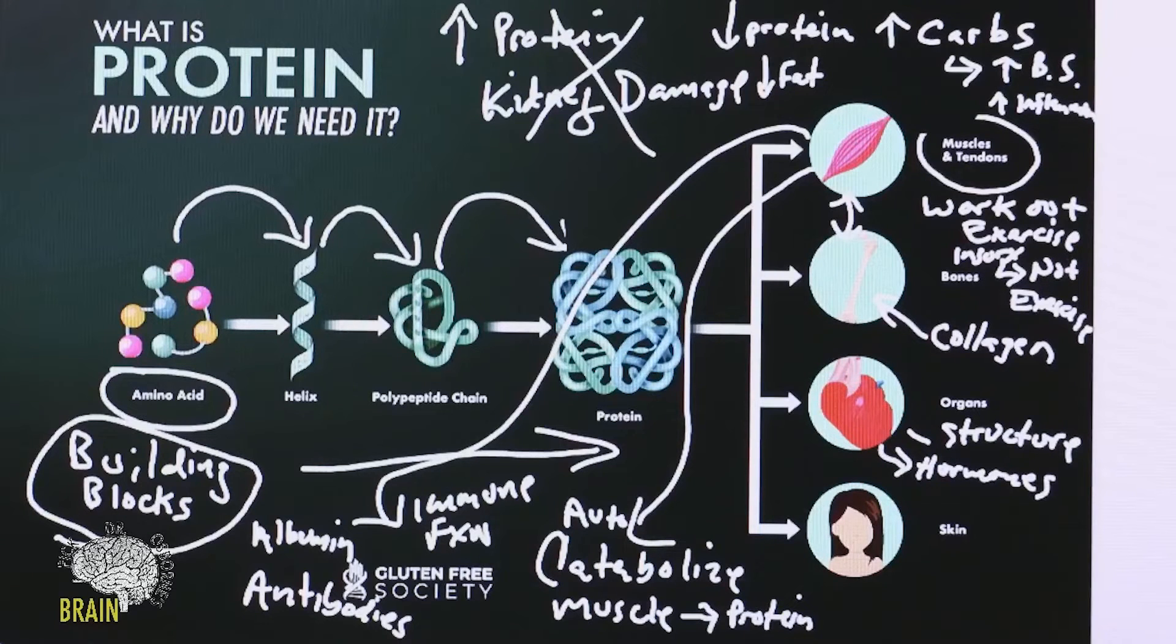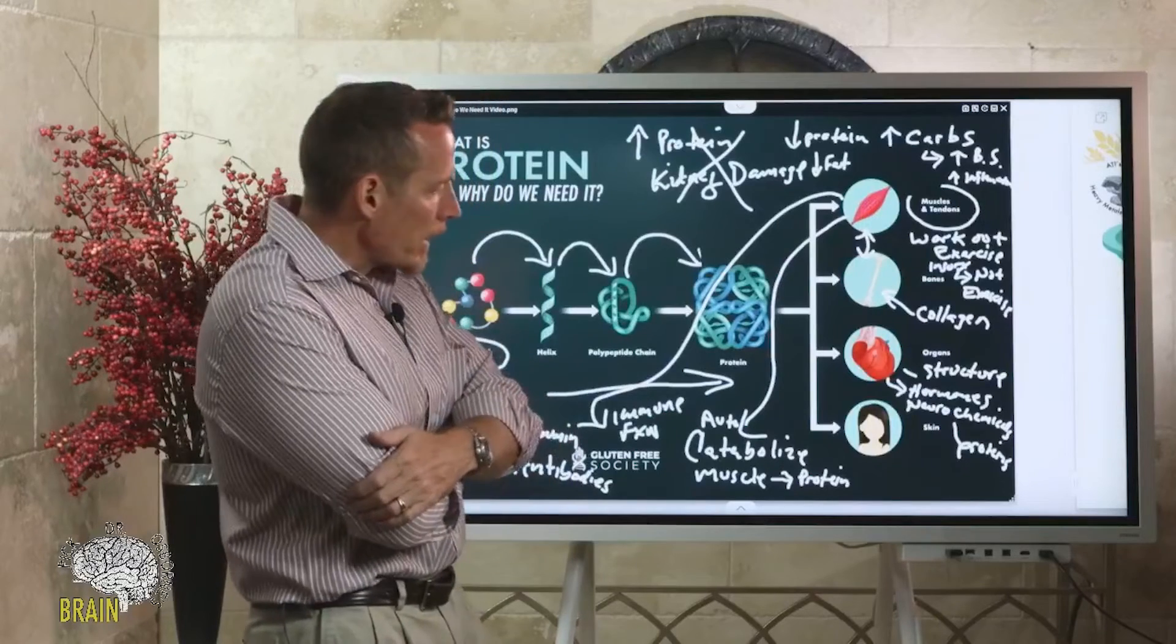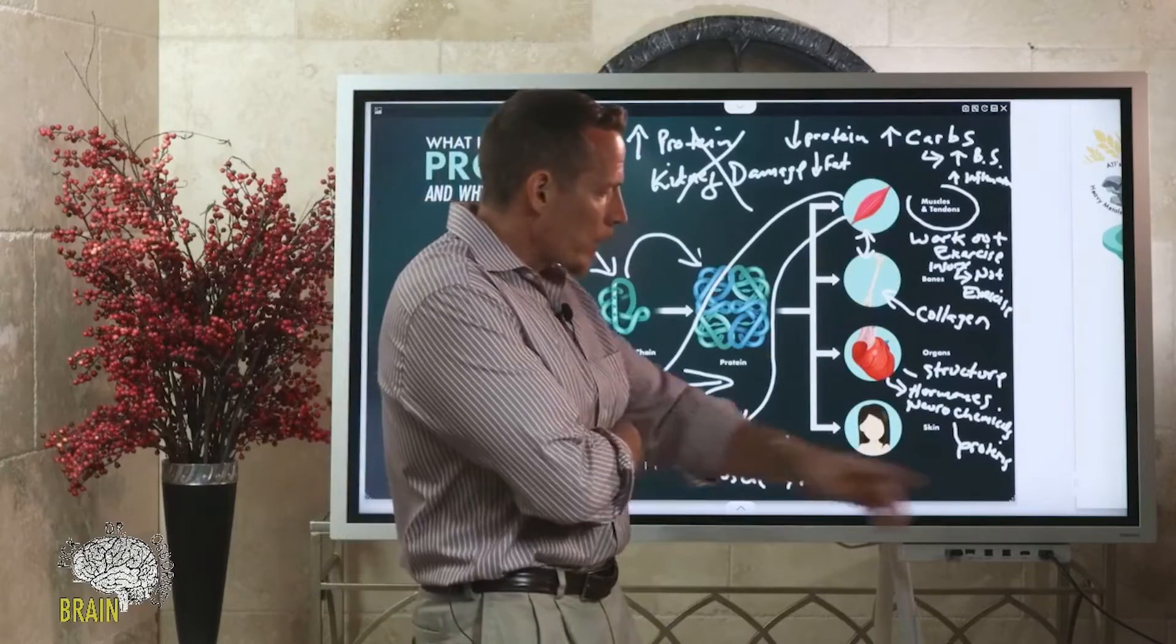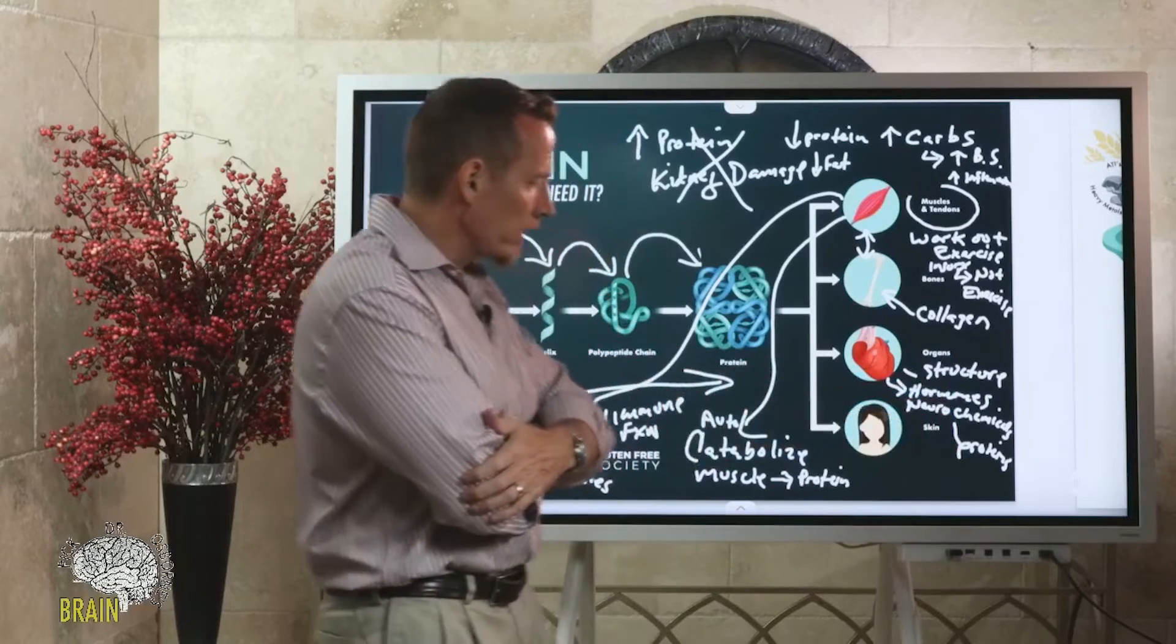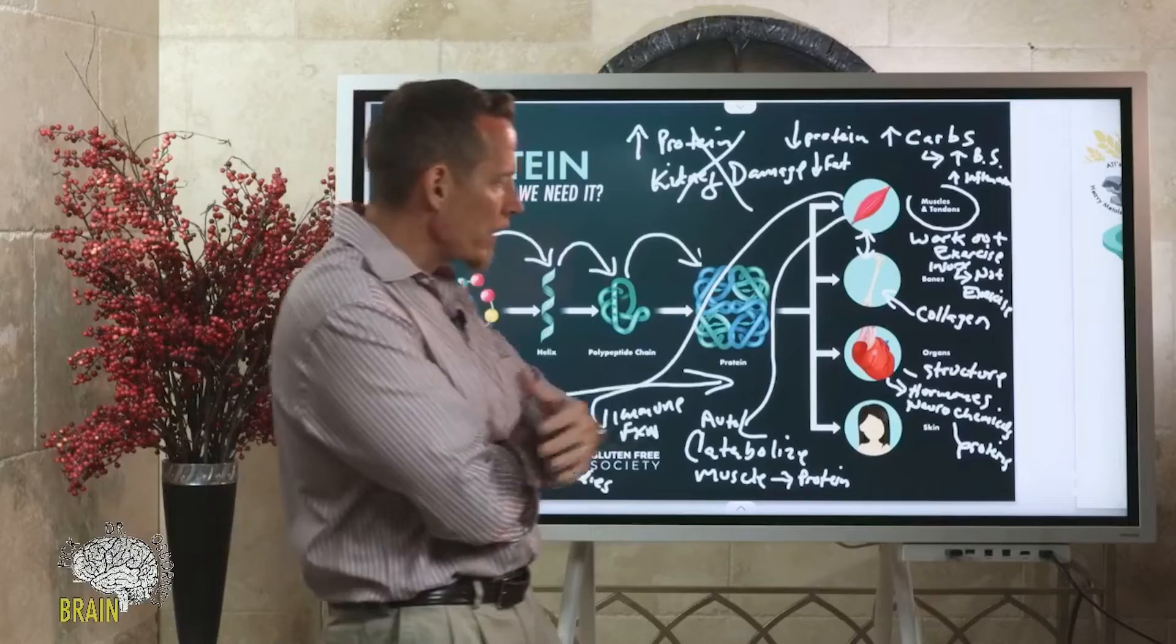Hormones and neurochemicals - these structures, if you will, are proteins. You can't make testosterone and estrogen or progesterone without protein. You can't make serotonin and dopamine and adrenaline without protein. So protein is required to produce your hormones and your neurochemicals.